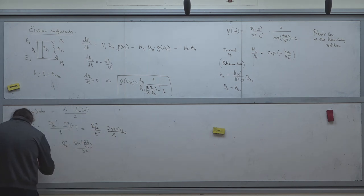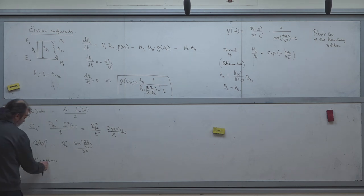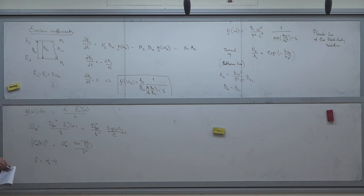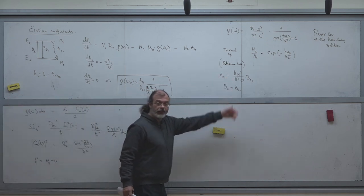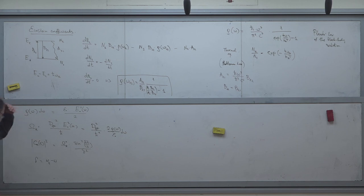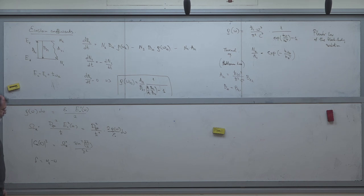The Rabi frequency can be expressed through the energy density: Ω_R² = |d_ge|²·(2ρ(ω)/ε₀)·dω/ℏ². Another result from last week was the excited state population in the perturbative regime: |c_e(t)|² = Ω_R² · sin²(δt/2) / δ², where δ = ω₀ − ω is the detuning. For monochromatic light δ is fixed; here, with Planck's distribution, ω varies, so δ changes as a function of ω.